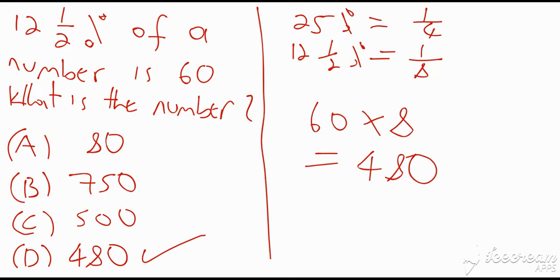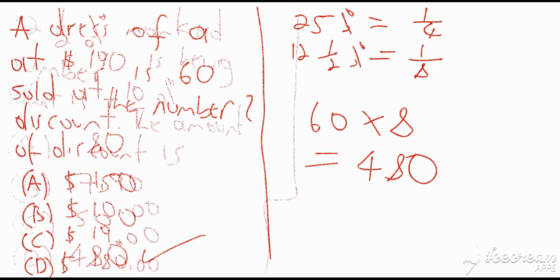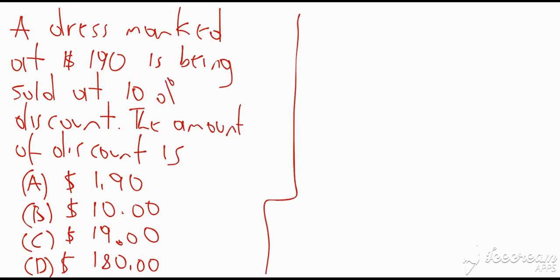Here's our next question guys: a dress marked at $190 is being sold at 10% discount. The amount of discount is? Now the dress is marked at $190 and I'm taking off 10%. Now there are several ways to look at this. Percentage is out of 100, and 10% as a fraction, we could look at it as an equivalent fraction, is really one-tenth because there are 10 tens in 100. So we could choose to go 10 over 100, this percentage is out of 100, 10 over 100.